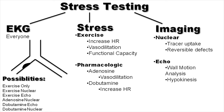There are different possibilities for types of stress tests. You could do an exercise-only stress test where you hop on a treadmill, get an EKG, and run as long as you can while we monitor your EKG. There's an exercise nuclear where we make you run and do nuclear imaging. We could do an exercise echo where you run and we do an echo. We could do adenosine nuclear, which is a vasodilator — those always have to be paired with nuclear imaging; you can't just do vasodilation on its own. Or you could do dobutamine to speed up your heart rate with echo and/or nuclear. Those are all the different possibilities.